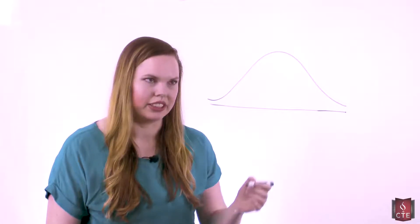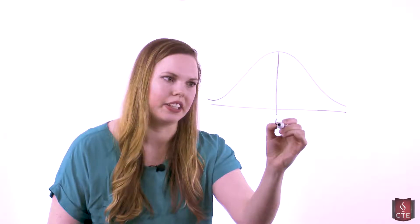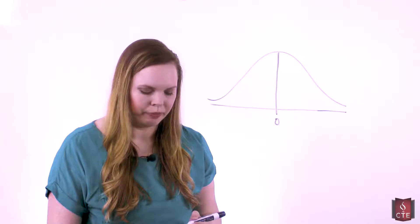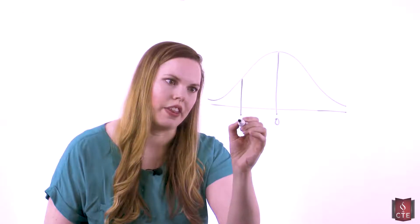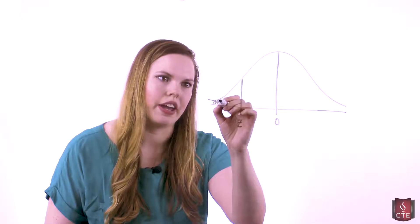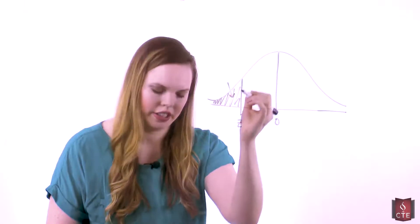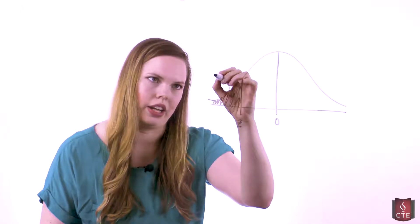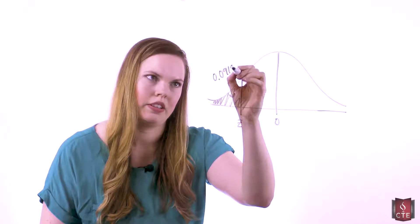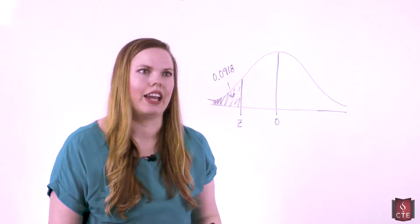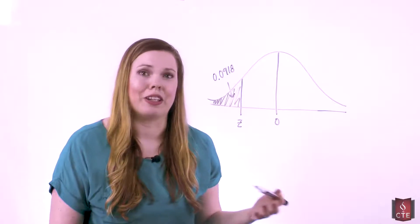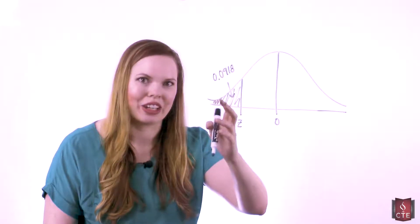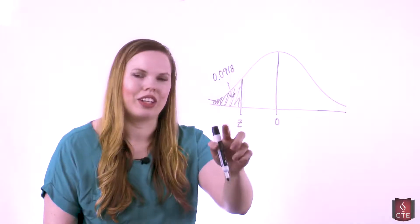We'll really see the application of this later when we go to using x's instead of z's. For a standard normal curve with a mean of zero, I am looking for this z, and I know that this area is 0.0918. This is the reverse of finding the probability — in this case you're given an area, you're given a probability, and you're looking for the z.